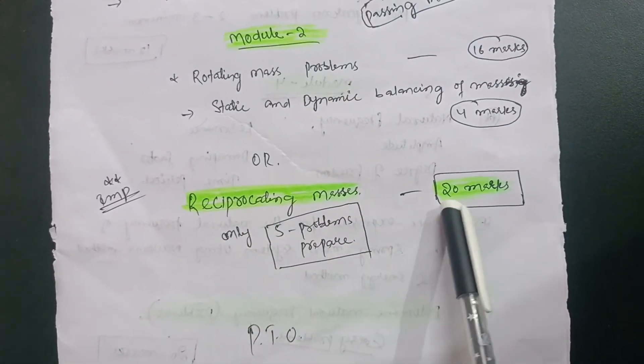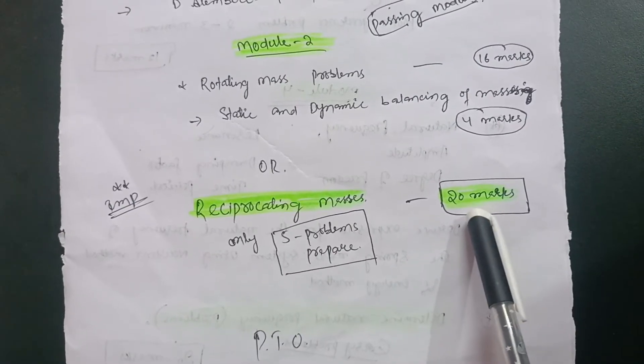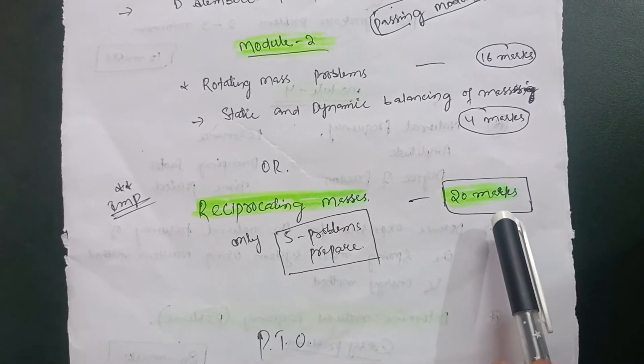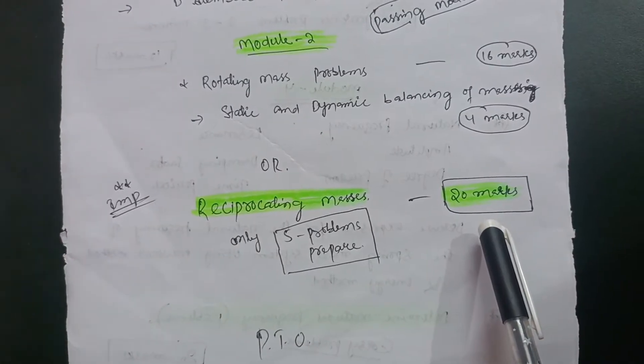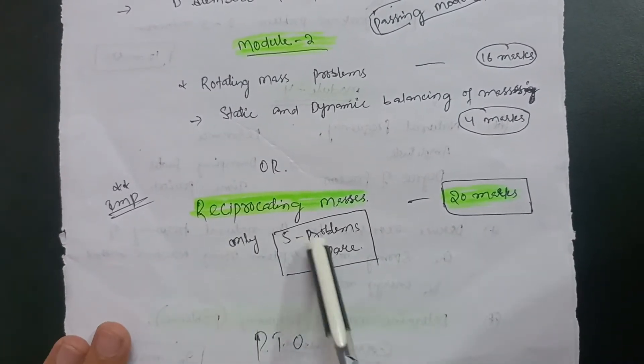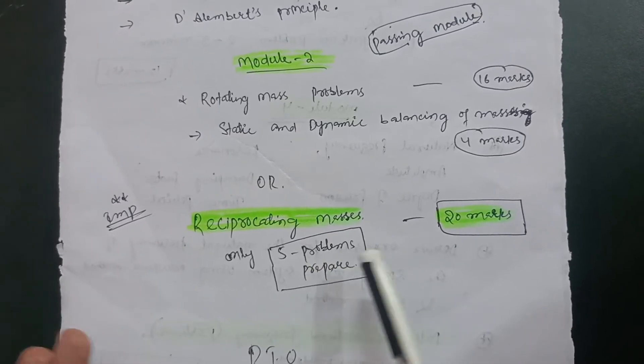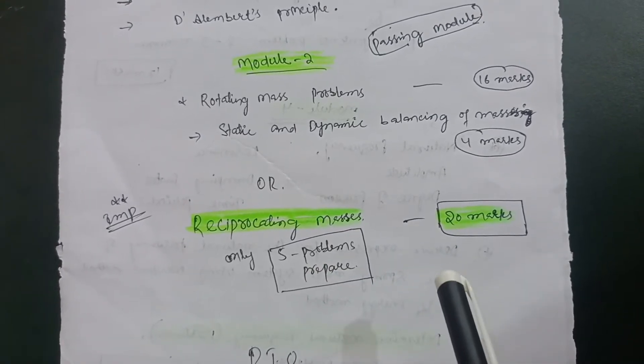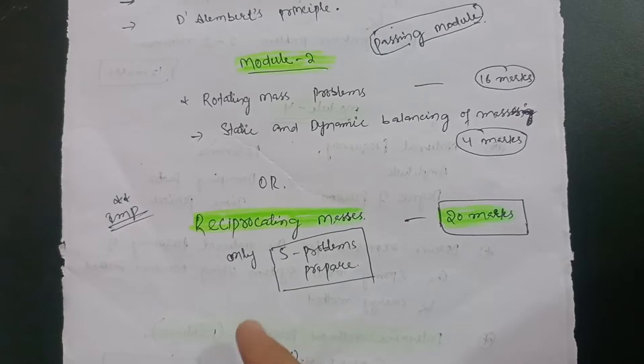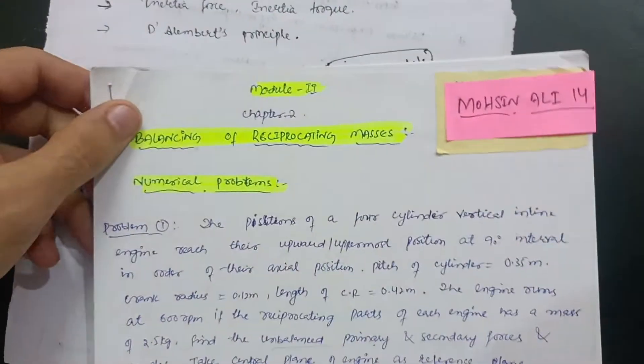I prefer you just go for its R part as it is very simple and easier. That is reciprocating masses. It carries 20 marks, a definite question. There are five problems in this particular content. Out of five problems you should go through two or three problems so that you will get some idea how to do these problems.